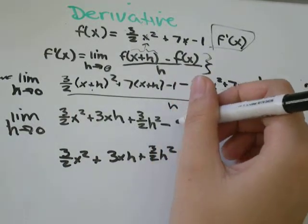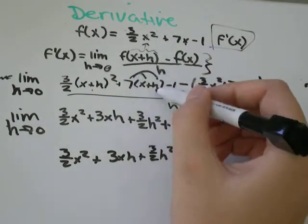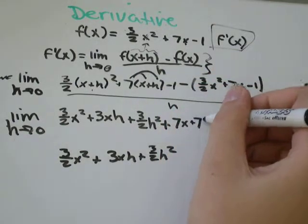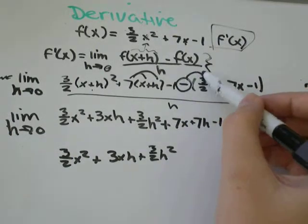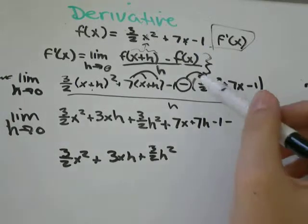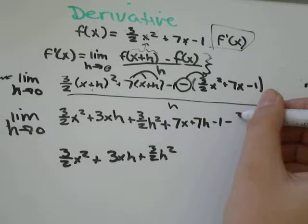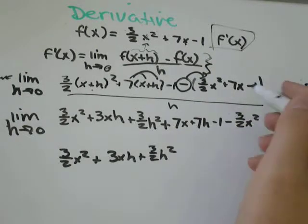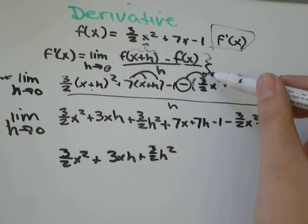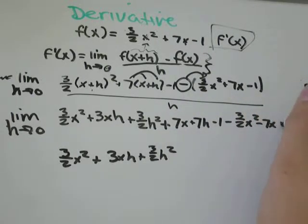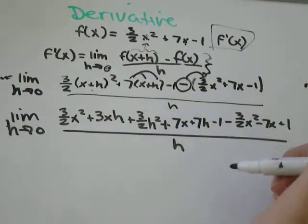Plus 7 times x is 7x, 7 times h is 7h, minus 1, minus, I'm just going to distribute the negative sign into f of x. So negative 1 times 3 over 2x squared would be negative 3 over 2x squared, negative 1 times 7x is minus 7x, and negative 1 times negative 1 would be positive 1. And that's all still being divided by h.